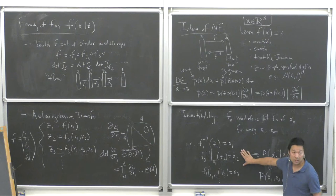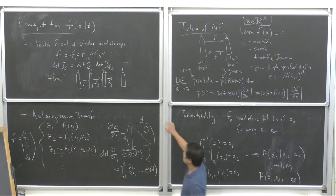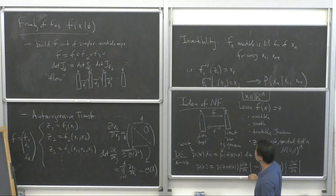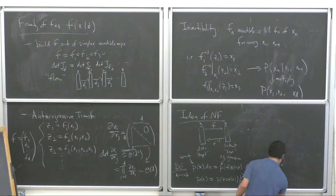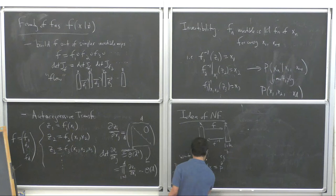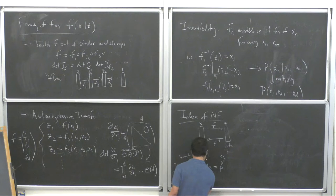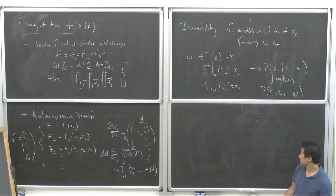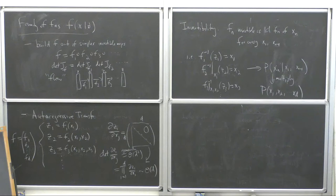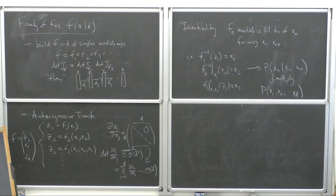Now let me tell you a few families of functions with the invertibility property. A popular and effective choice is pretty much the simplest thing you could think of: the linear transformation. Zn = An(X1,...,Xn-1) * Xn + Bn(X1,...,Xn-1). You can see this has the structure that if you hold fixed the previous coordinates, it's just a linear mapping, so it's invertible — as long as An is not zero.